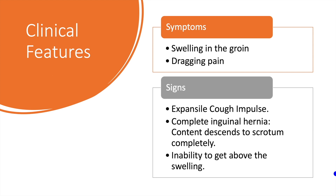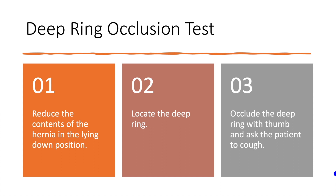Expansile cough impulse is felt. In complete inguinal hernia, the contents descend to the scrotum completely. We are unable to get above the swelling on palpation. There are certain clinical tests that can be done to differentiate between direct and indirect hernia.